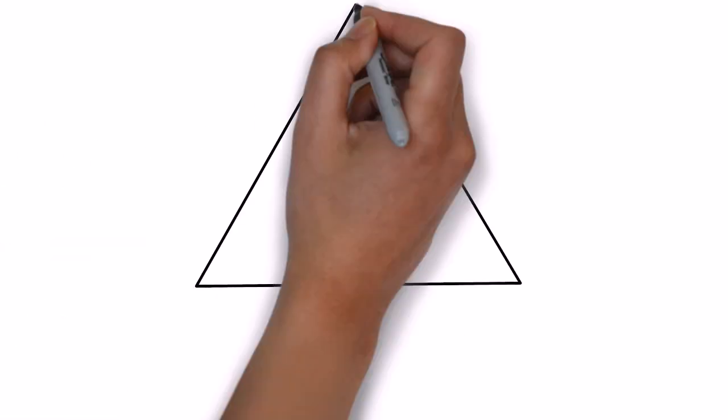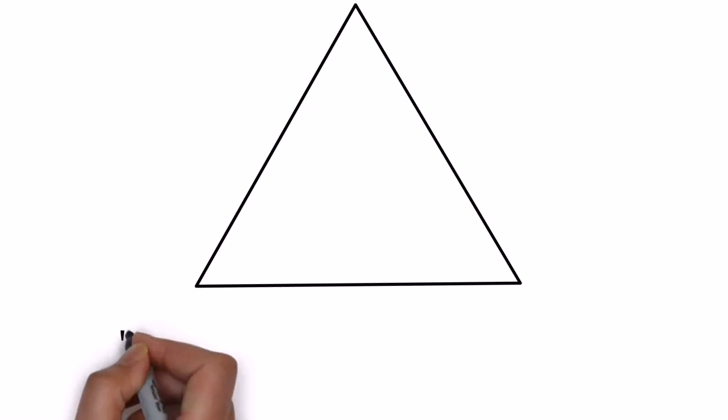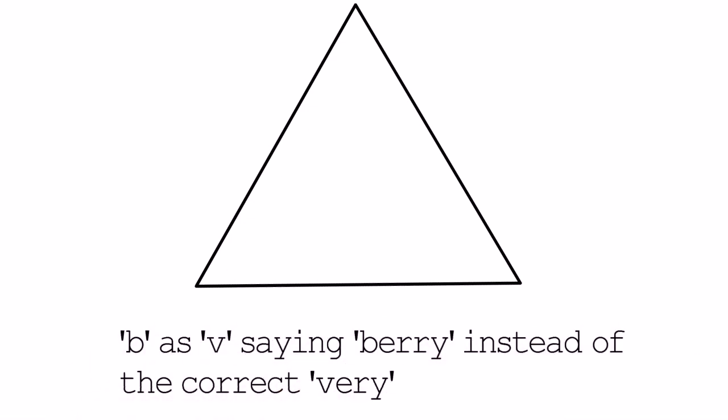This is a mountain, by the way, not a triangle. B and V confusion. Maybe saying berry instead of very. A very big mountain. Again, it's all about your mouth position.